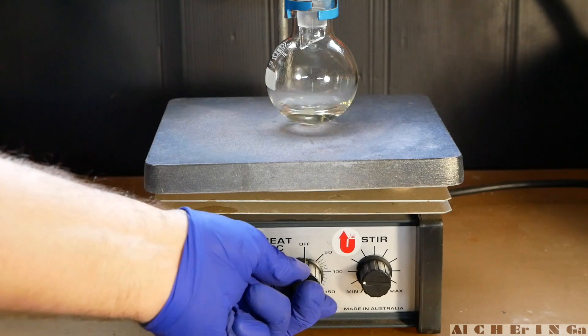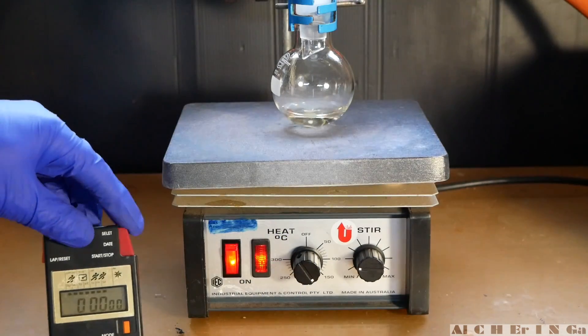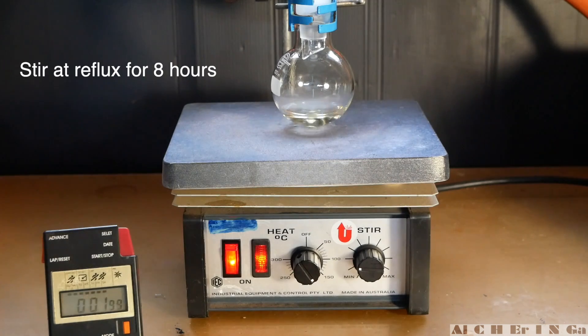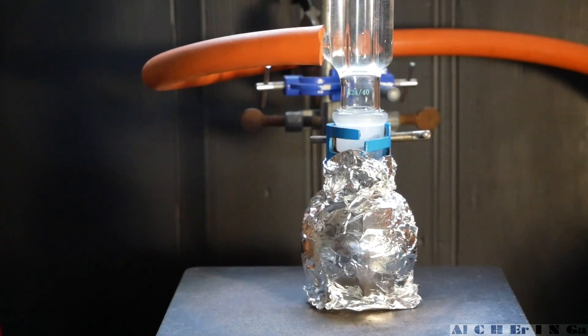Turn the hot plate on and set the knob. Start timing the experiment and leave the mixture to stir at reflux for 8 hours. Make sure to wrap the flask with aluminium foil as well.